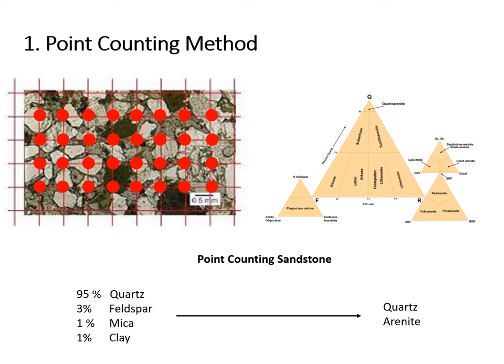Those frequencies tell the analyst what type of sandstone the sample is, which provides information on things like how the rock was formed. In this case, the point count analysis revealed that the sample is a quartz arenite.